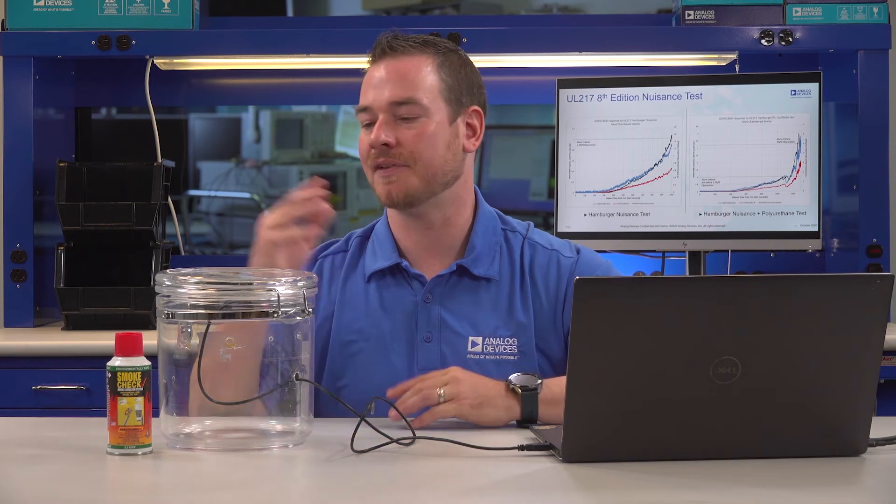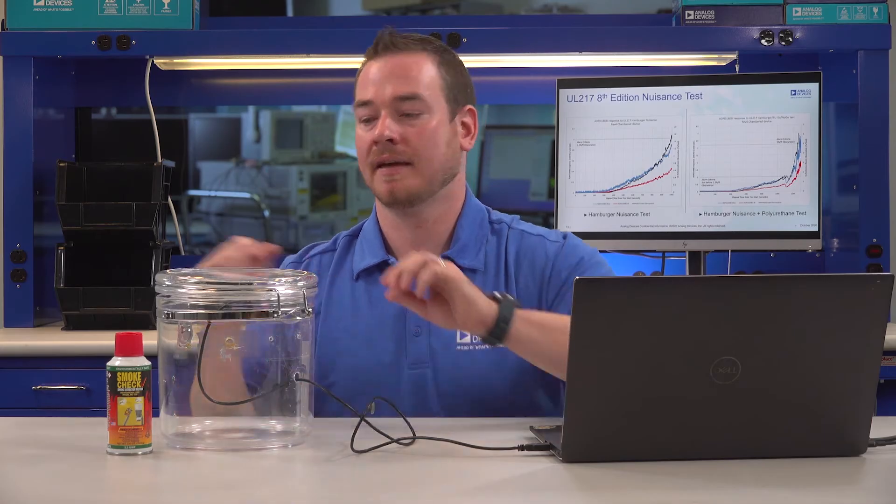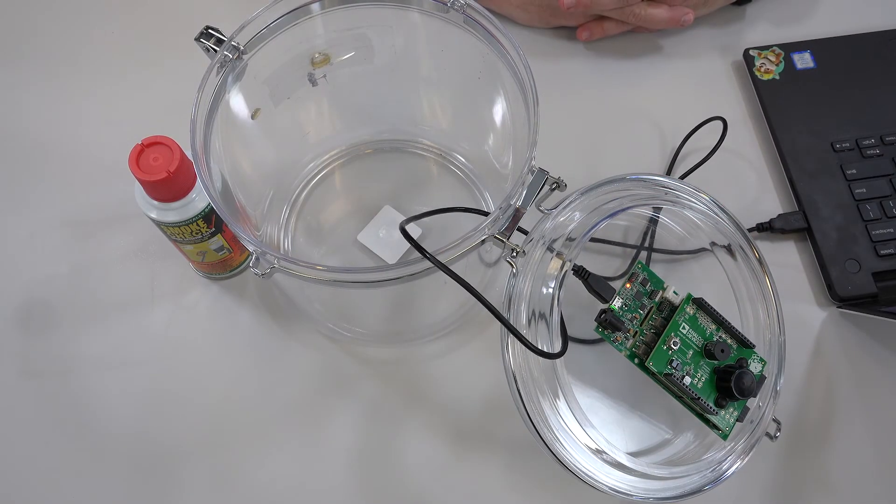I've set up a demo to emulate a smoke environment. Next to me I have a sealable container that is going to be used to collect the smoke. As you can see, I've got the CN0537 smoke detector board and the MCU board velcroed to the ceiling of our container.